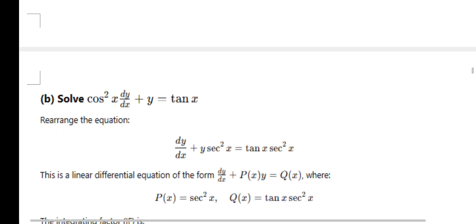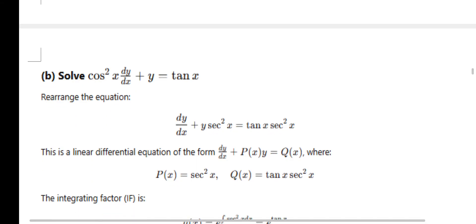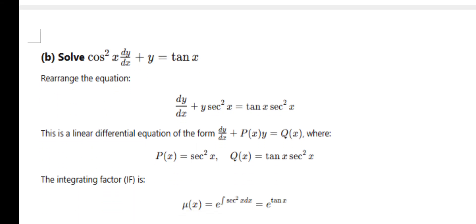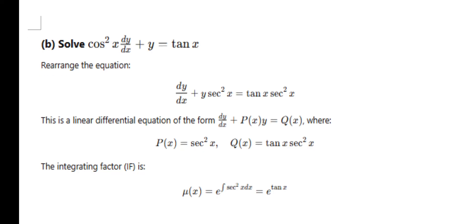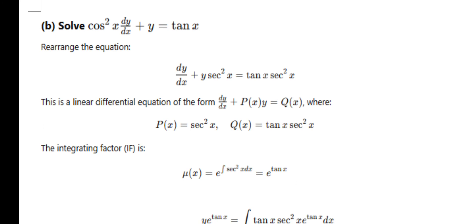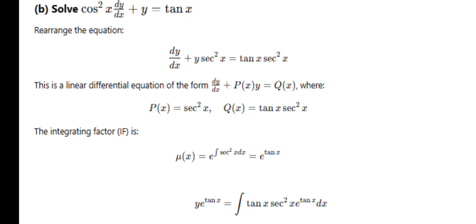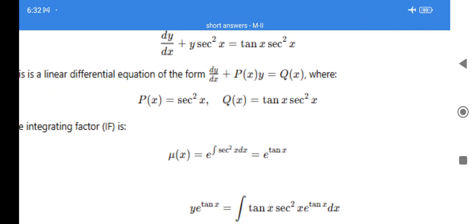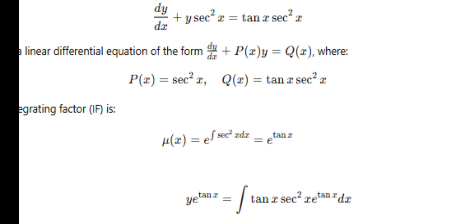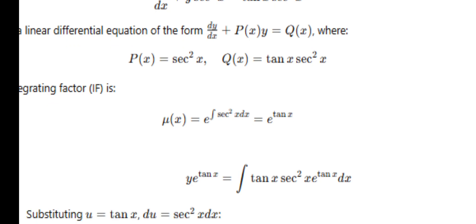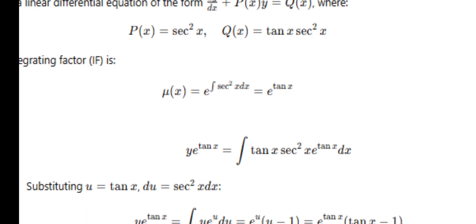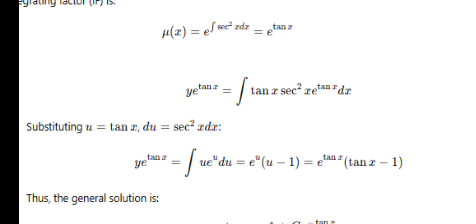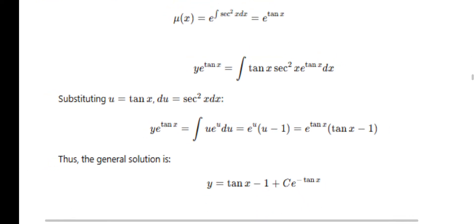Next: solve cos²x · (dy/dx) + y = tan x. Divide both sides by cos²x so dy/dx is alone: dy/dx + y·sec²x = tan x · sec²x. This is in linear DE form dy/dx + Py = Q. The integrating factor is e^(∫sec²x dx) = e^(tan x). Substitute into the general solution: y · e^(tan x) = ∫tan x · sec²x · e^(tan x) dx. Let tan x = t and integrate. It is a lengthy 2-mark problem.